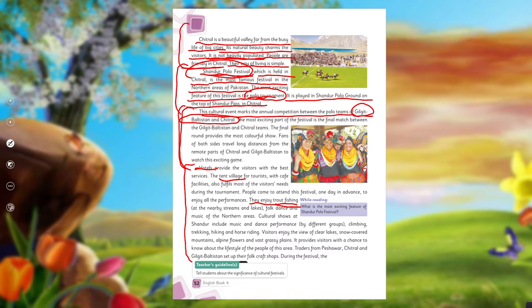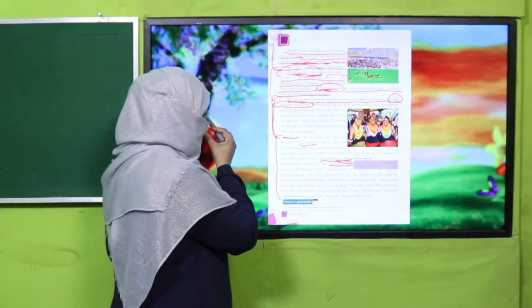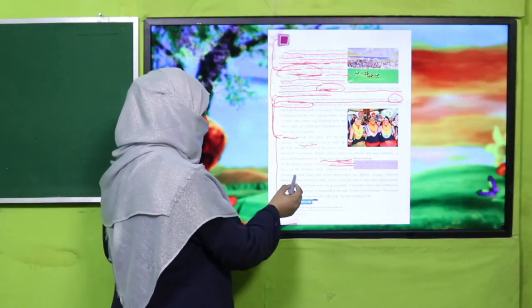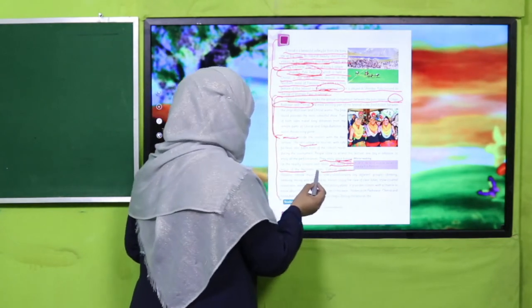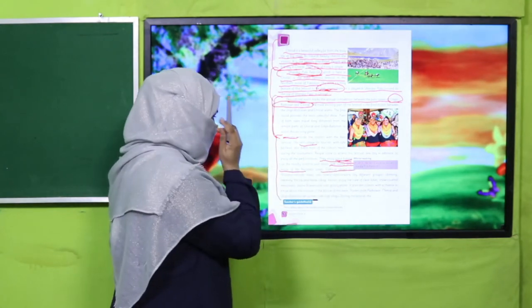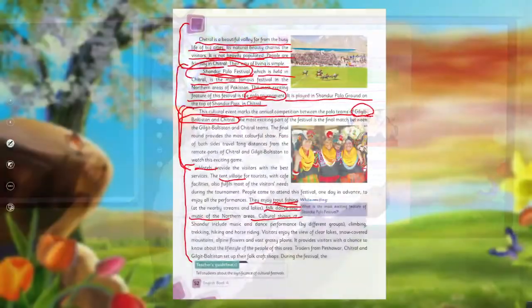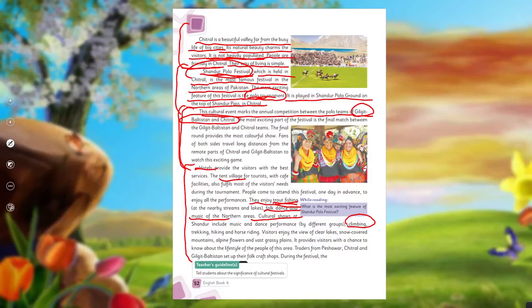People come to see this match and they enjoy many activities. People do fishing, and there is also dance and music — these are all things that people enjoy. People also do mountain climbing, trekking, hiking, and horse riding. These are the different activities that people participate in at the festival.